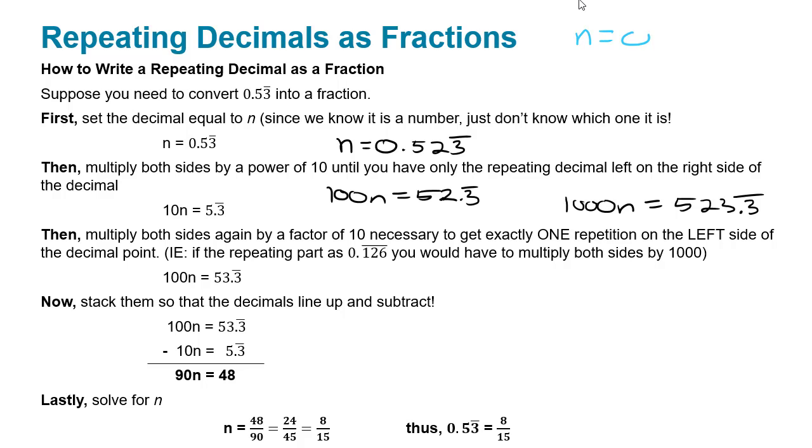So 1,000n equals 527.27 repeating. And that's the pattern. That's what we'll always do, regardless of what we start with. It's a pretty simple pattern that we're just multiplying by powers of 10 to first isolate the repetition all by itself, and then the second one is to get exactly one of the repetitions on the left-hand side and then still just a repetition by itself on the other side.